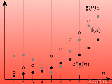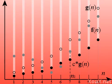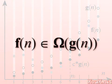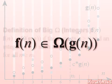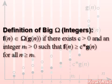Likewise, we might have a constant multiple of a function g(n) such that c times g(n) bounds f(n) below from some point n₀ onward. In this case, f(n) is said to be in Big Omega of g(n). Formally, we say that f(n) is in Big Omega of g(n) if there exists a positive constant c and a positive integer n₀ such that f(n) is greater than or equal to c times g(n) for all n greater than or equal to n₀.